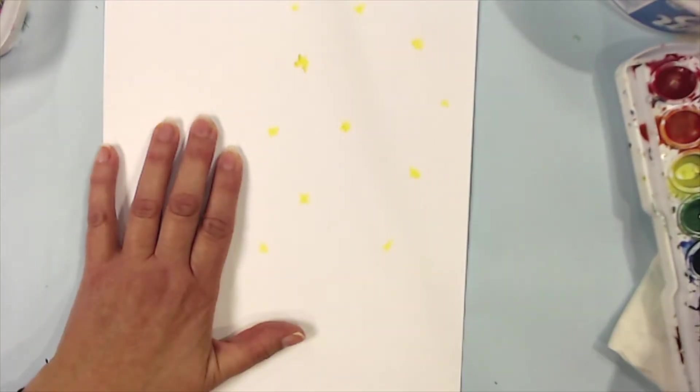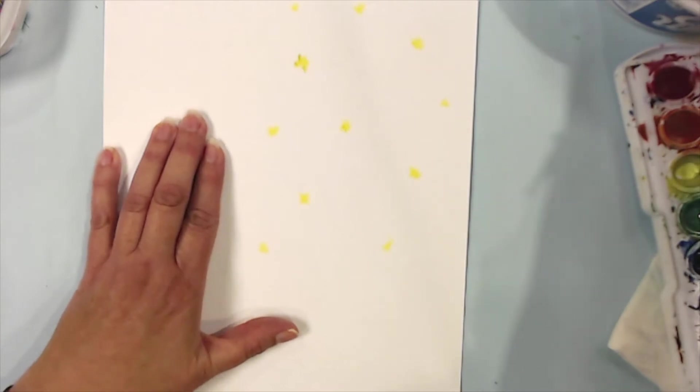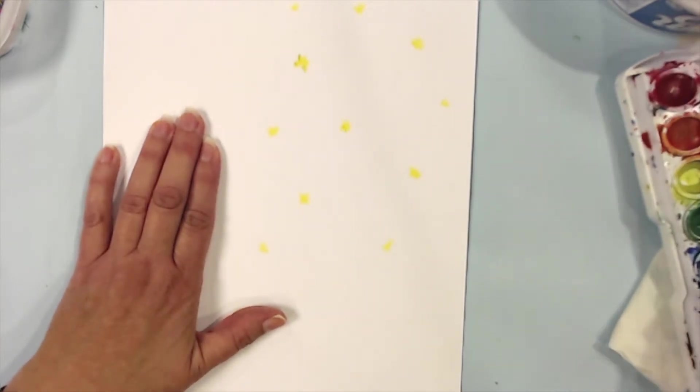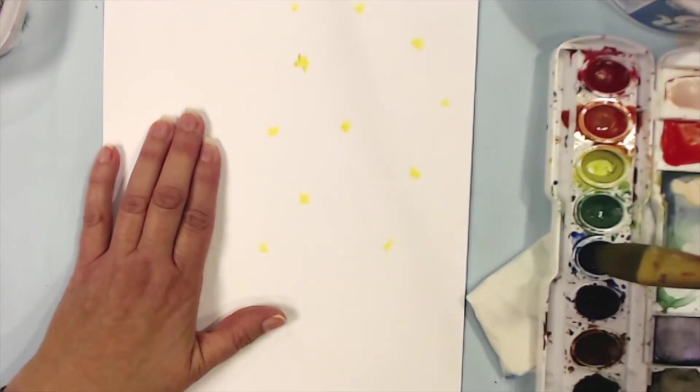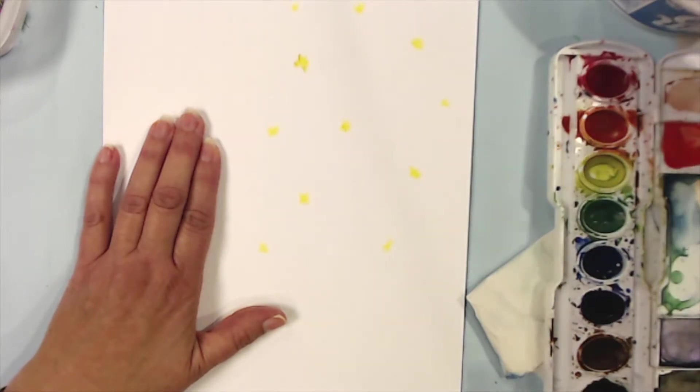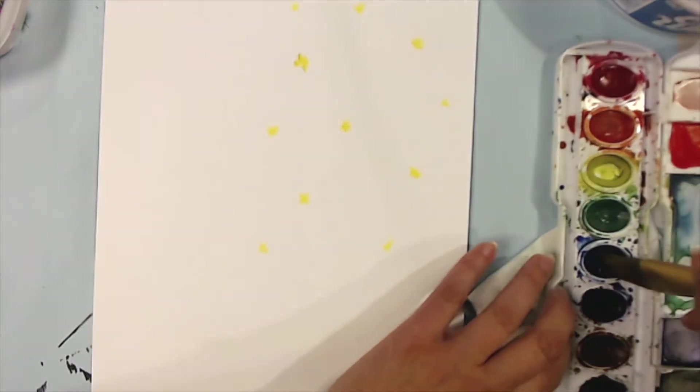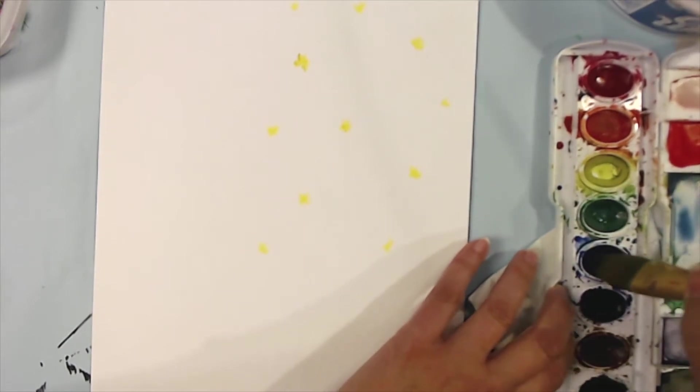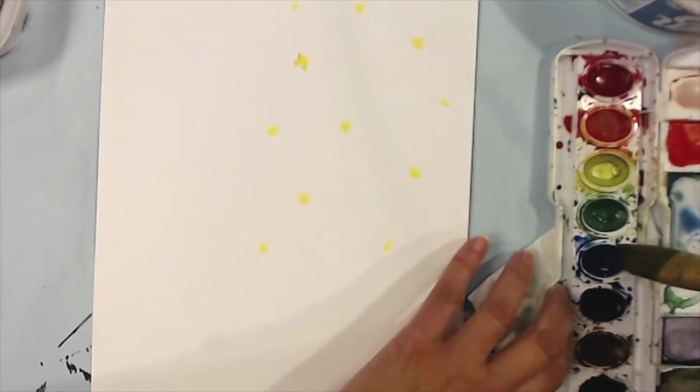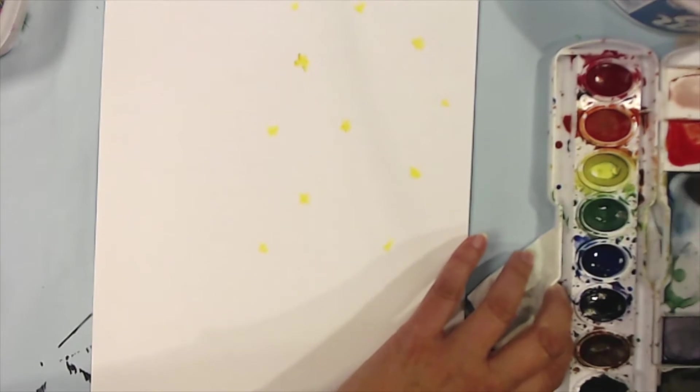And then I'm going to paint over this entire area with a light wash of watercolor. Now this is supposed to be a night sky, so I'm going to mix up a really dark blue over here in the lid of my paint tray. If you don't have a lid for your watercolor paints, you can just use a styrofoam or a plastic plate. A piece of foil or a piece of wax paper works well.